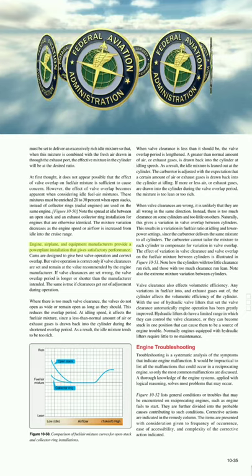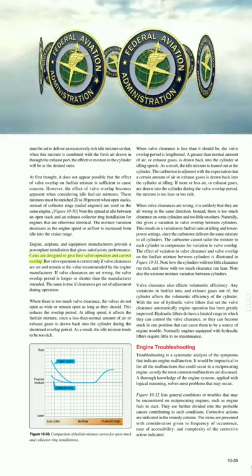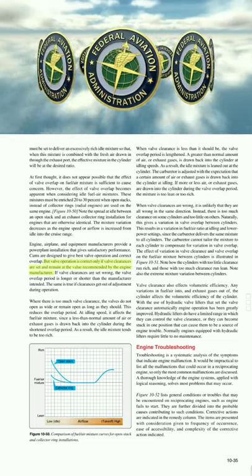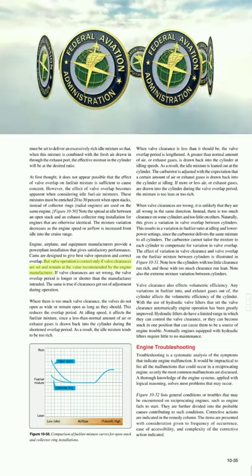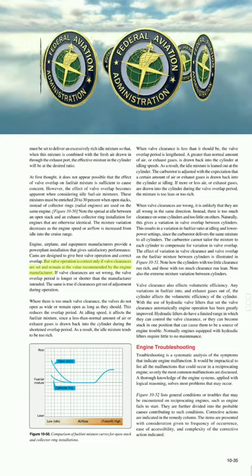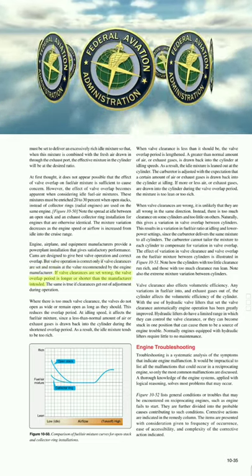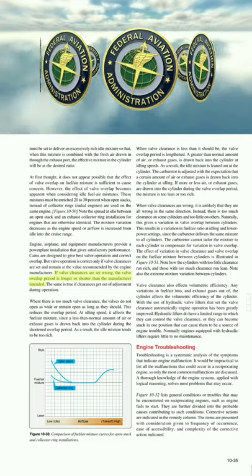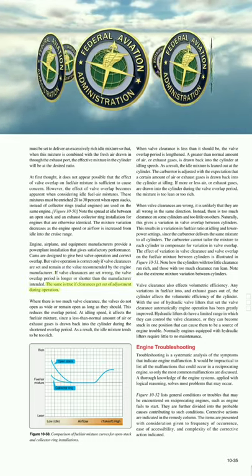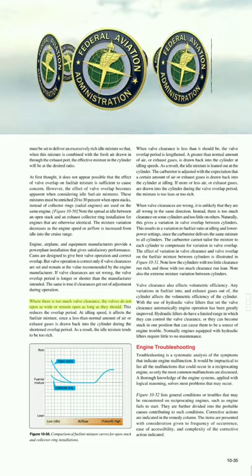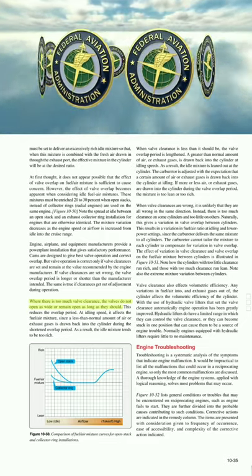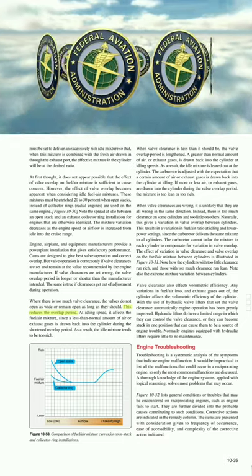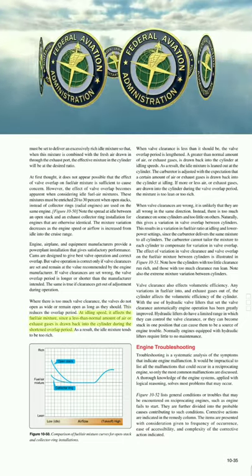Engine, airplane, and equipment manufacturers provide a power plant installation that gives satisfactory performance. Cams are designed to give best valve operation and correct overlap, but valve operation is correct only if valve clearances are set and remain at the value recommended by the engine manufacturer. If valve clearances are set wrong, the valve overlap period is longer or shorter than intended. Where there is too much valve clearance, the valves do not open as wide or remain open as long as they should, reducing the overlap period.